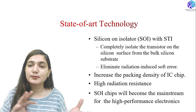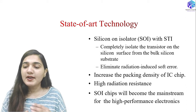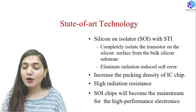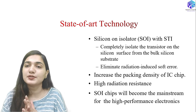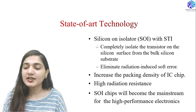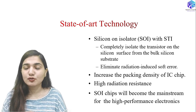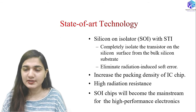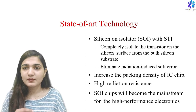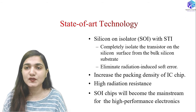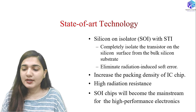Using SOI with STI completely isolates the transistor on the silicon surface from the bulk silicon substrate underneath, which eliminates radiation-induced soft errors. This is a very big advantage of using silicon-on-insulator. SOI involves more process steps to fabricate, but its significance is that it reduces soft errors.